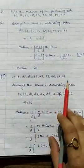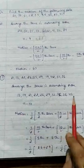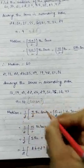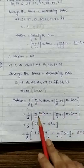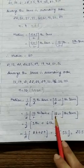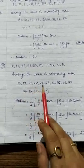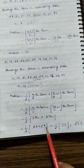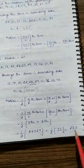Second part. Again data is given to you. We will arrange these terms in ascending order. Count the number of terms. Number of terms is 10. So 10 is even number. Formula for the median: in place of n, put 10. 10 by 2, 5th term. 10 by 2, 5 plus 1 is 6th term. Count the 5th and 6th term: 1, 2, 3, 4, 5. This is 5th and this is 6th. So I will take 26 and 29. Half of 26 plus 29. 26 plus 29 is 55. When you will divide, you will get 27.5.